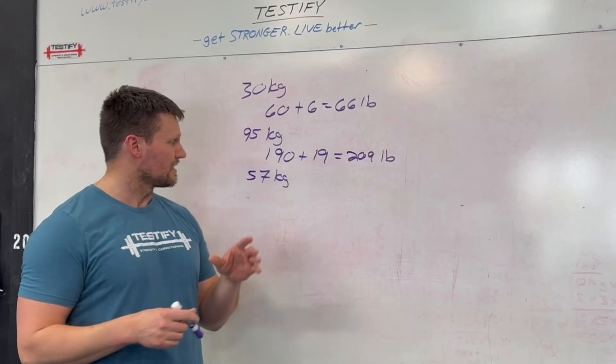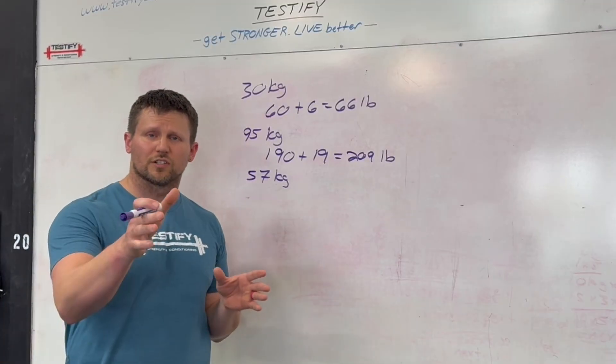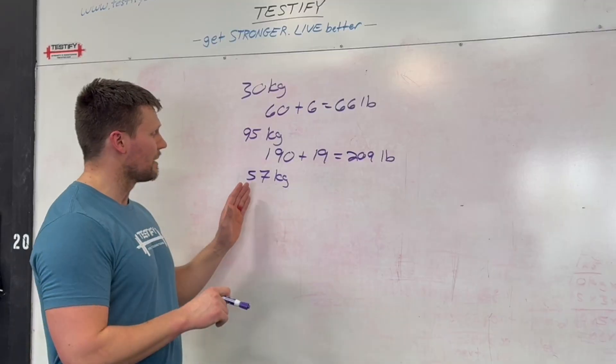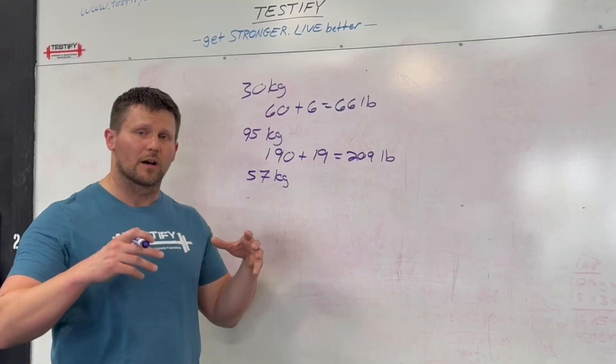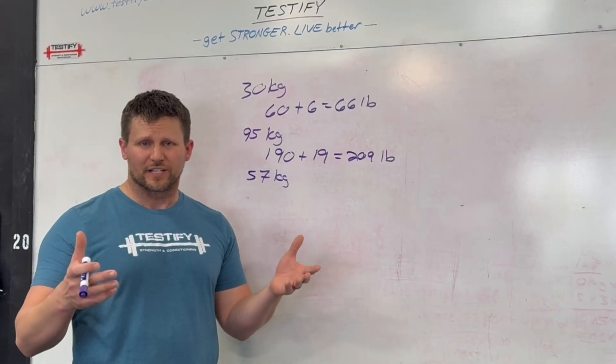The same process applies here. So we're going to double the 57. Now doubling 57 is kind of weird. Some of you can do it in your head, no problem. For those of you who struggle, what you can do is split up the 50 and the 7. So let's double the 50 in our heads. That's pretty easy. That's 100.